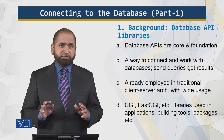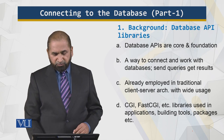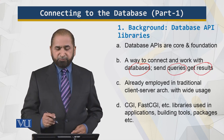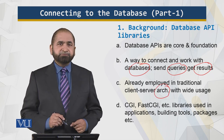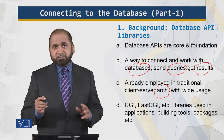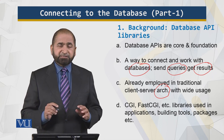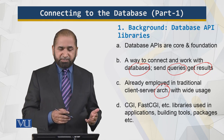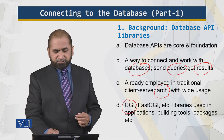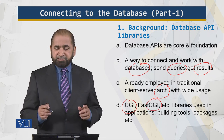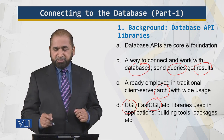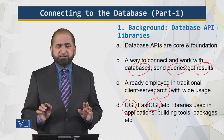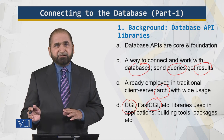Database APIs are a core foundation and they are used to connect and work with databases — to send queries and get results. They have been around in the client-server architecture for a while, though that's not the three-tiered architecture we've been discussing. It has wider usage because people can access databases and make results available to clients using CGI and FastCGI libraries. These libraries are used in application packages, building tools, and packages, and all of this is transparent to the developer, as we are talking about things happening at the server side.